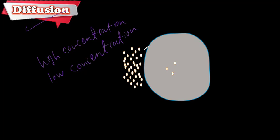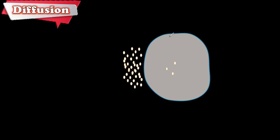For example, we have a high concentration of oxygen outside of the cell. Inside the cell there is a lower concentration, so the oxygen particles are going to diffuse into the cell. This is how it happens — the particles diffuse and get into the cell through the cell membrane, which allows these particles to pass.